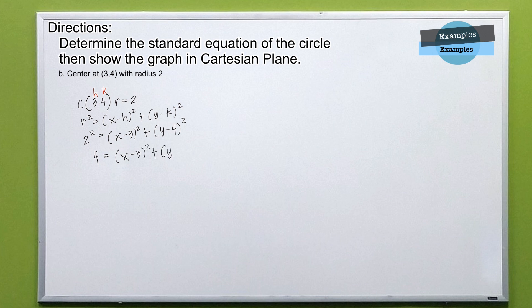Or, the quantity of x minus 3 squared plus the quantity of y minus 4 squared equals 4.